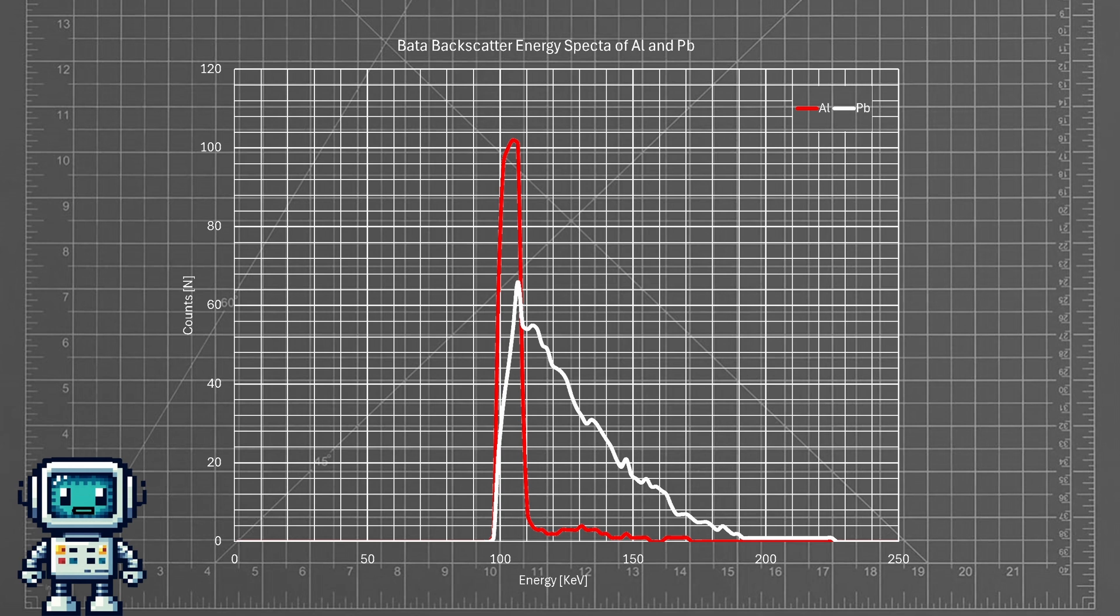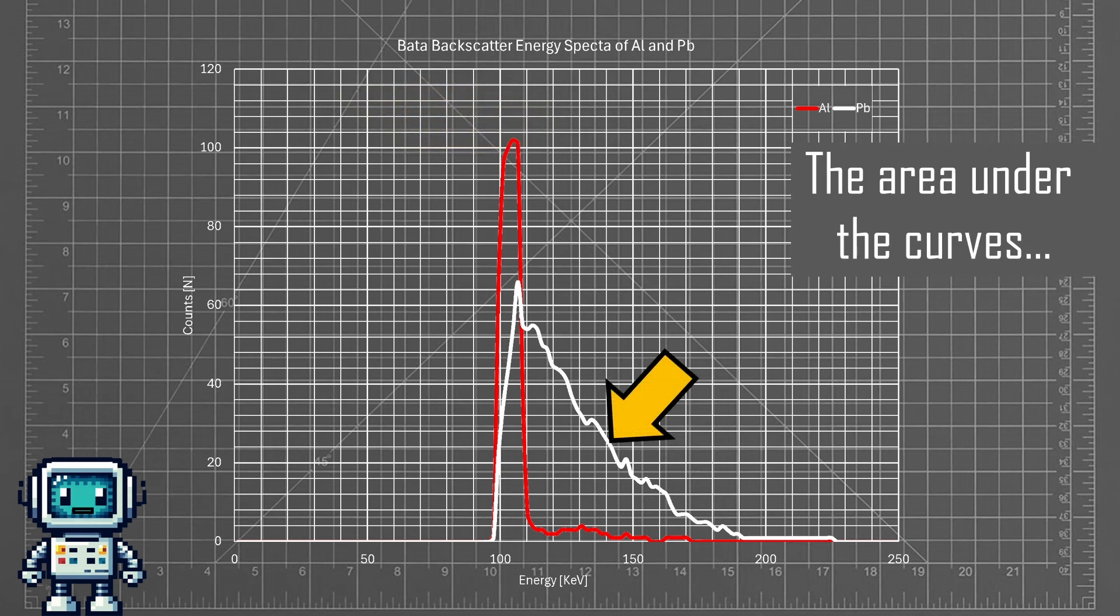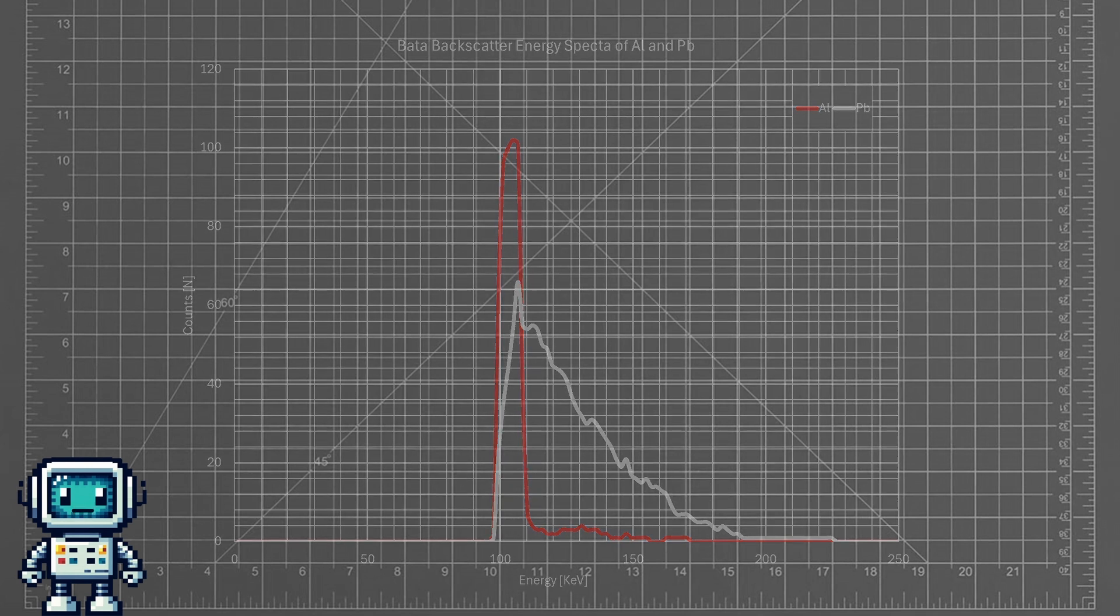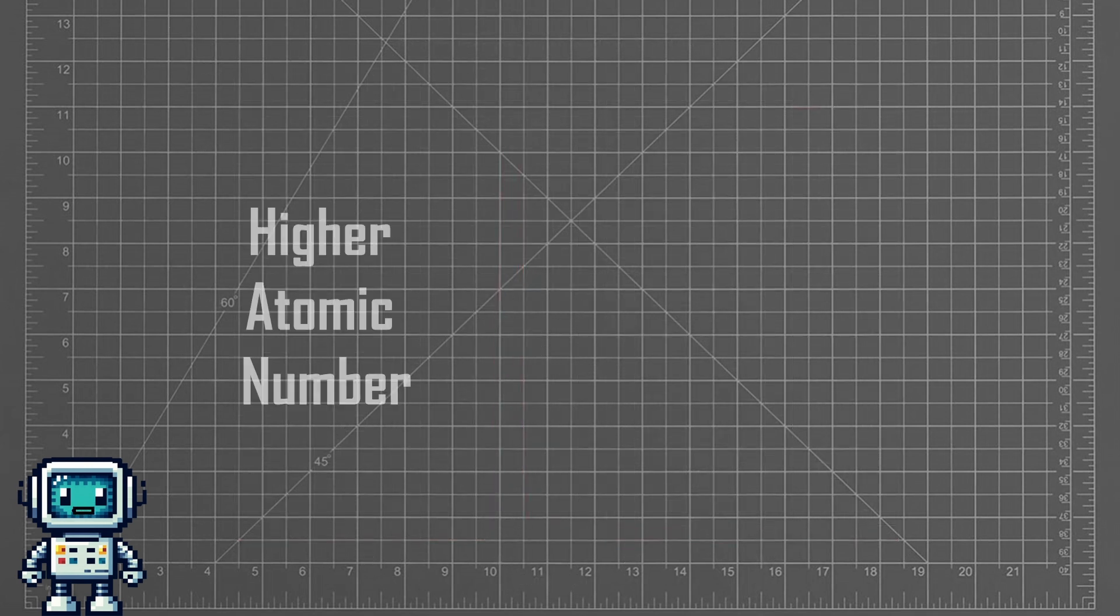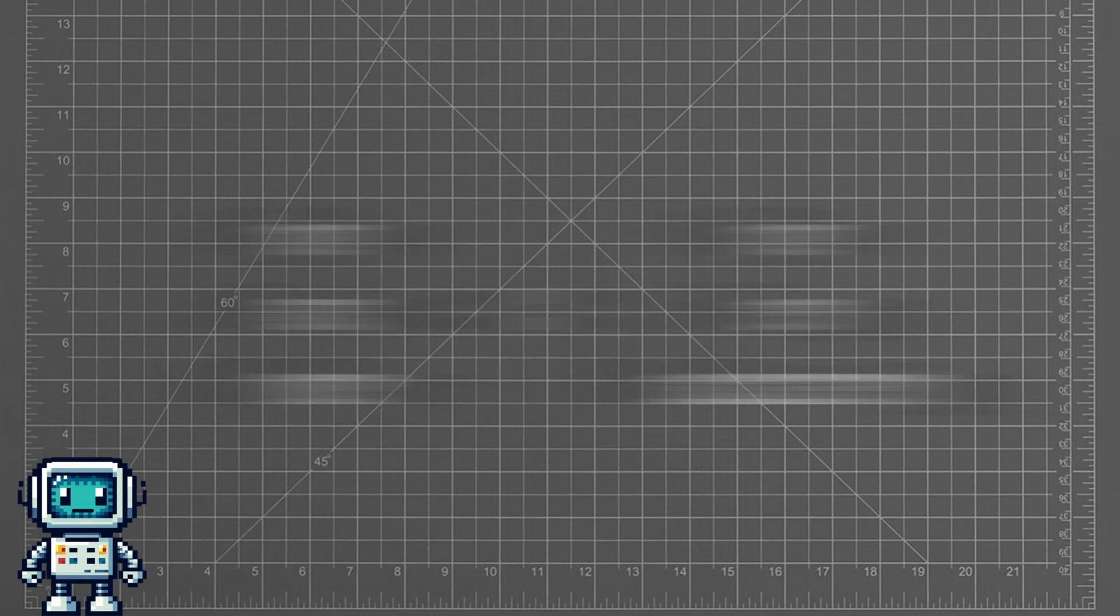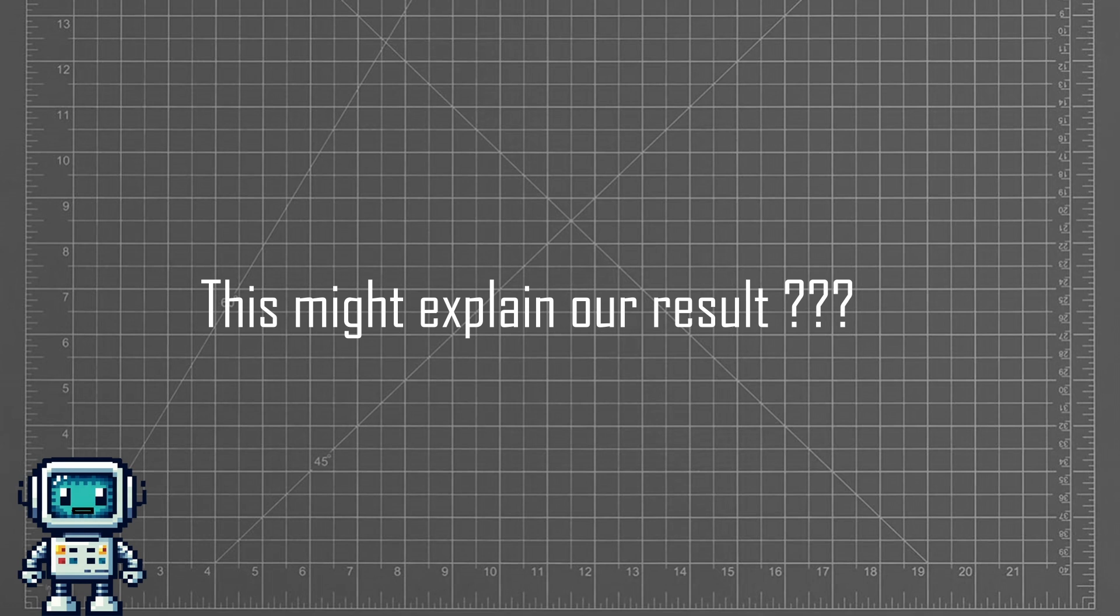What is most important to note though is that the higher atomic number of the test sample, the higher the energy spectra of the back-scattered beta particles. This could explain why our result differs from other published experimental data.